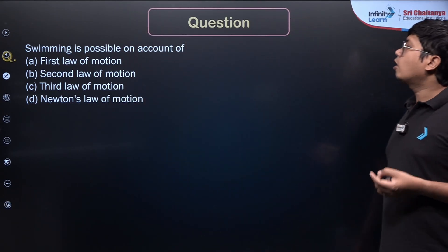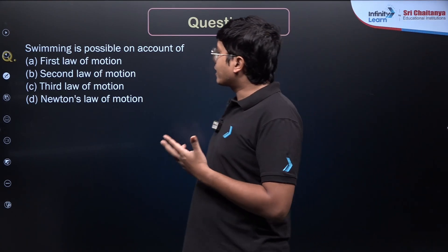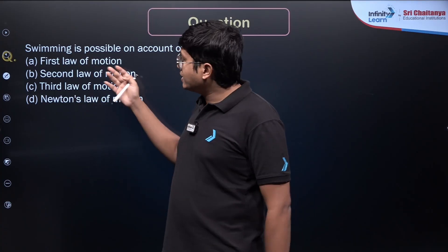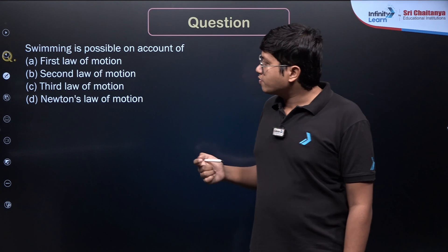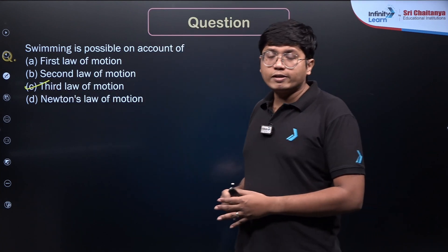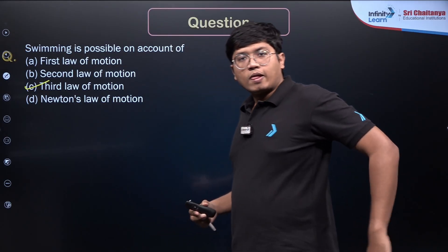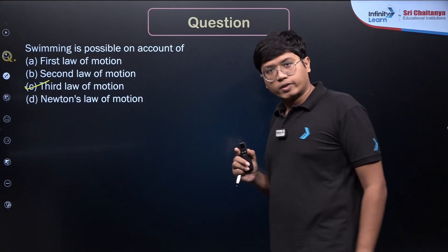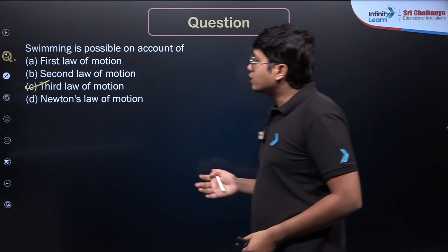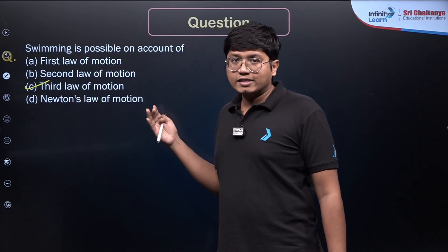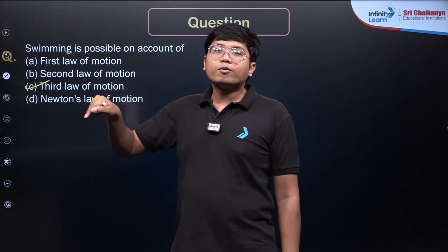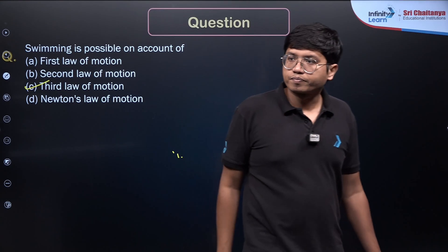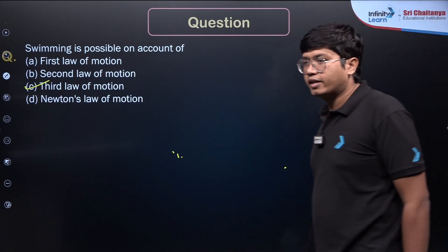Let's try this one. It says swimming is possible on account of which law of motion? First law, second law, third law, Newton's law of motion. You could say Newton's law of motion, but since there is a more correct answer over here, we will go for the third law of motion. Because how are we swimming? We are essentially pushing the water back, and if we push the water back, the water pushes us forward, and that is how we are able to move forward. So if there was no such mention, you could have said Newton's laws of motion. But in these kind of ambiguous places, if you see there is a more appropriate answer, even though this could have applied, but this is more appropriate, you mark that one.